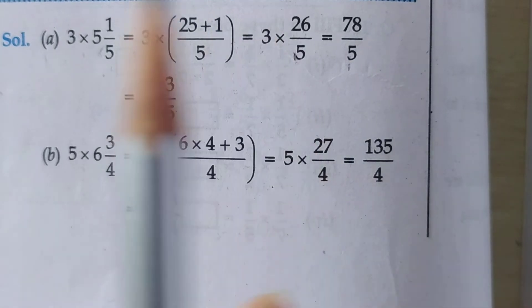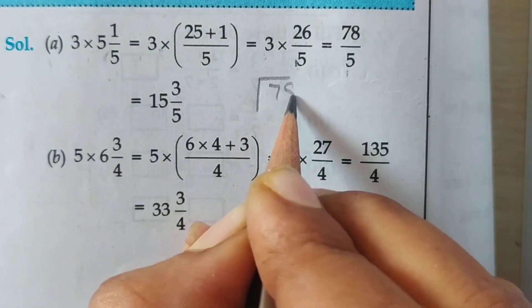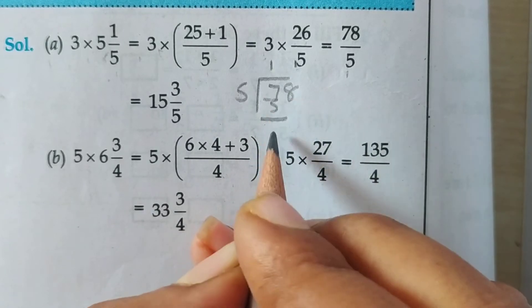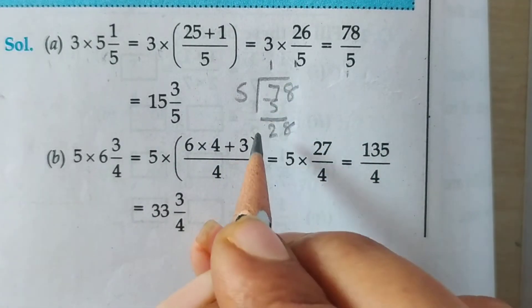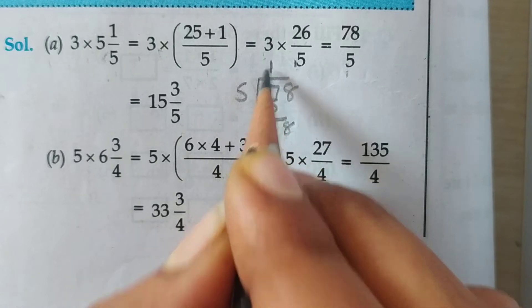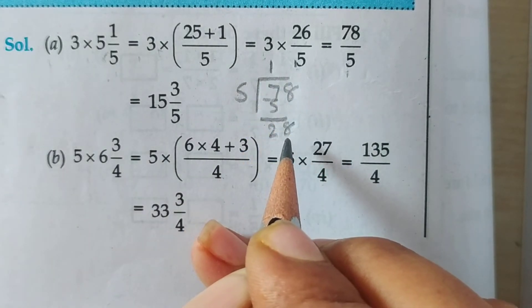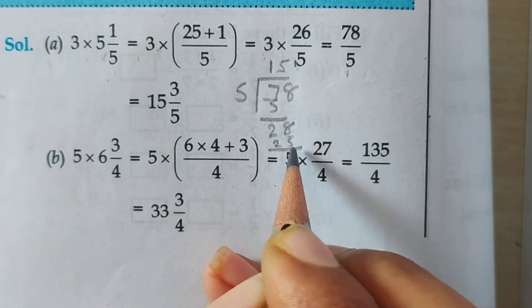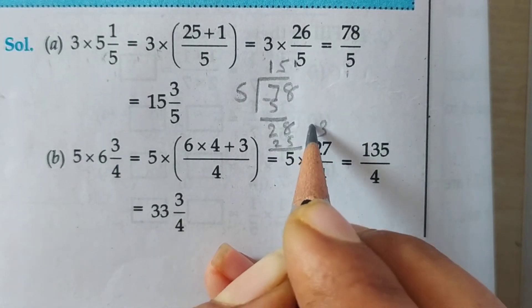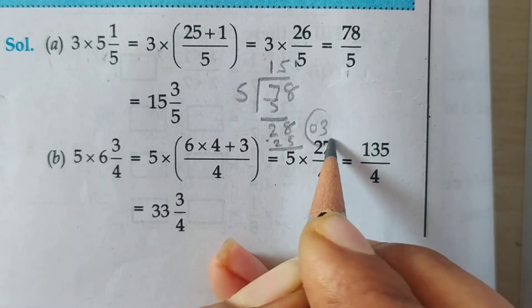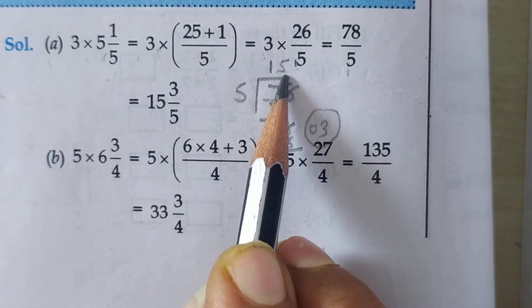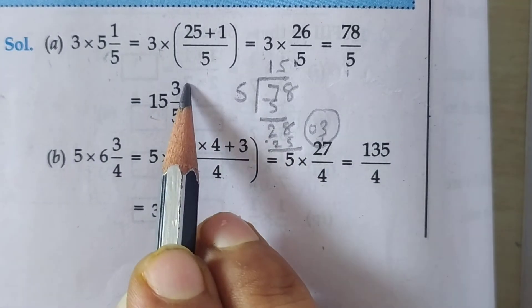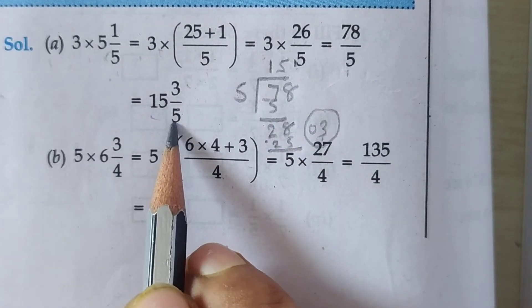Do division: 78 upon 5. 5 ones are 5, 7 minus 5 is 2, take 8 down. Now 5 fours are 20 and 5 fives are 25 — so 25. 28 minus 25 is 3, so remainder is 3. Now students, 15 is the quotient, so write 15 as the whole number, remainder 3 in the numerator, and 5 as it is. The answer is 15 and 3 upon 5.